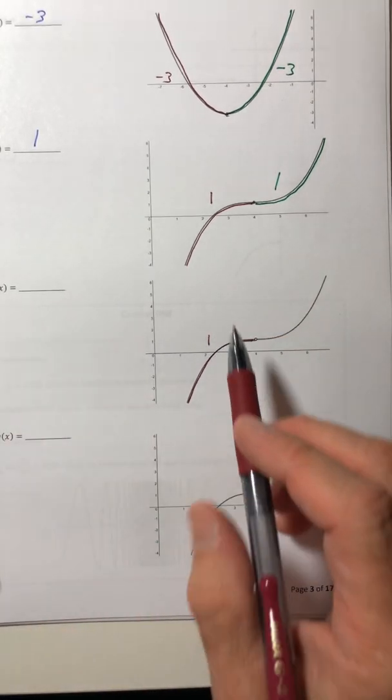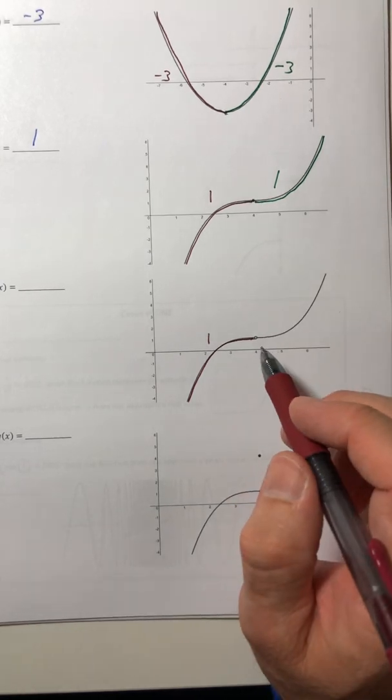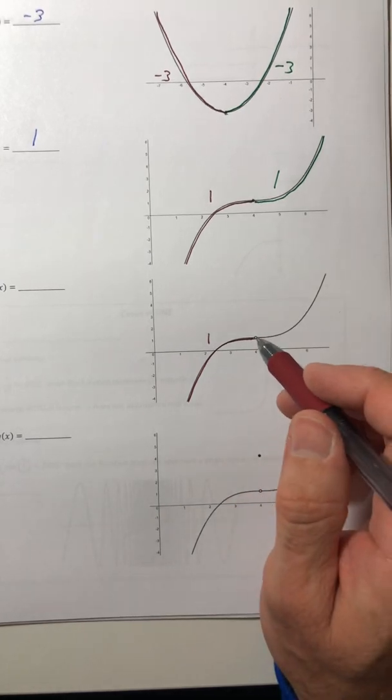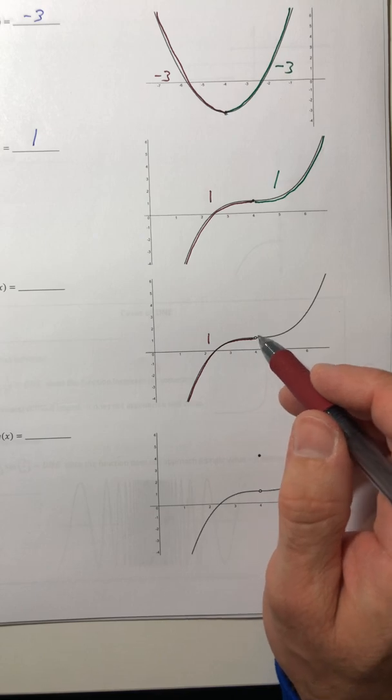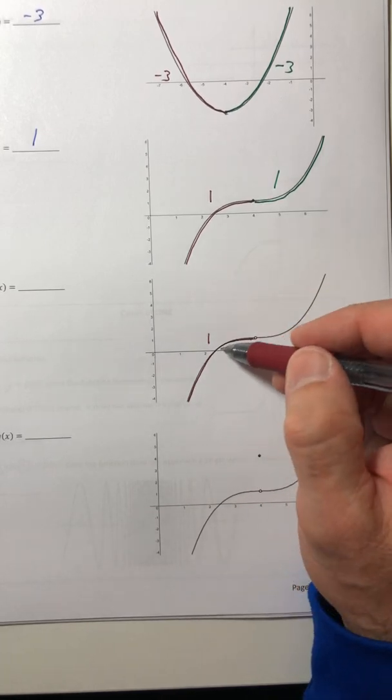And that's what the limit is doing. It's saying, hey, what are you getting closer and closer to? Not what is the actual value when X is four? Because there is no values. The function value is not defined, but it wants to know, well, what is it that you're approaching?